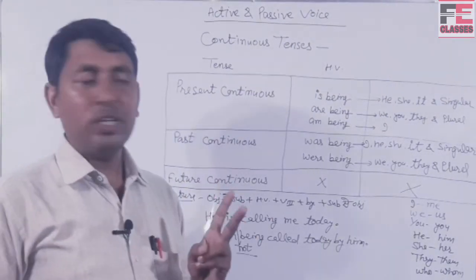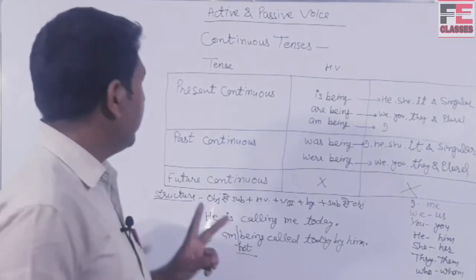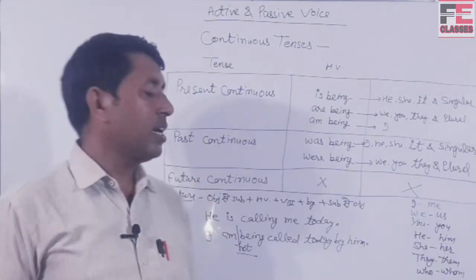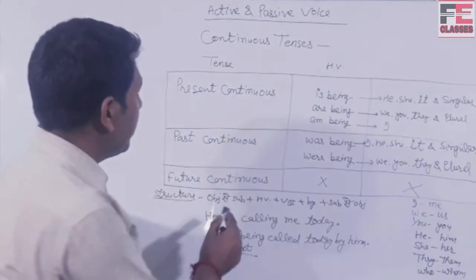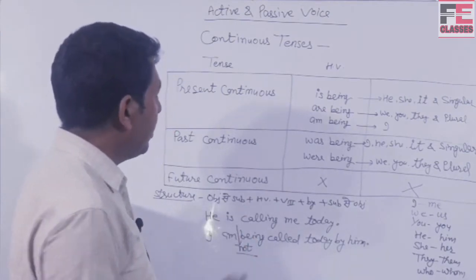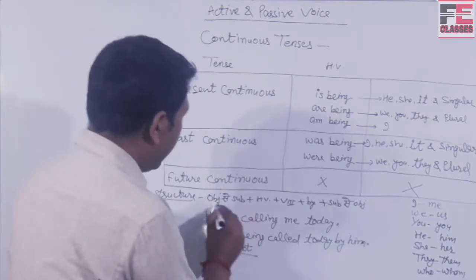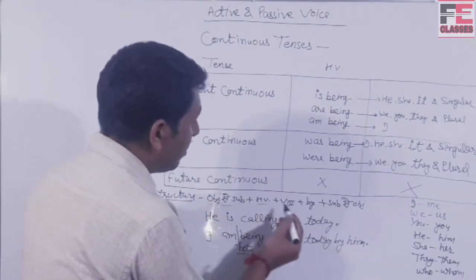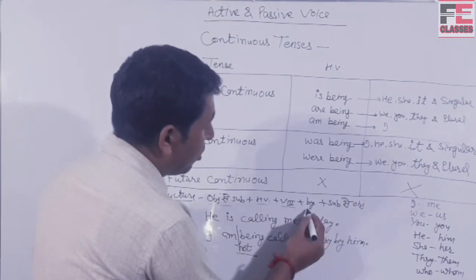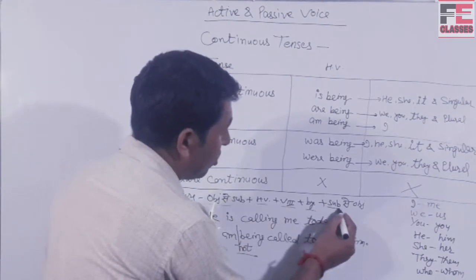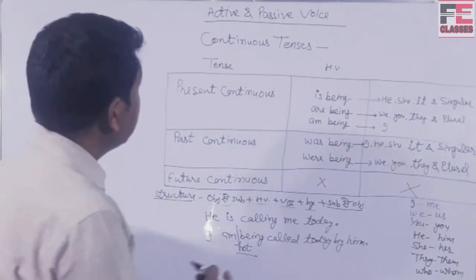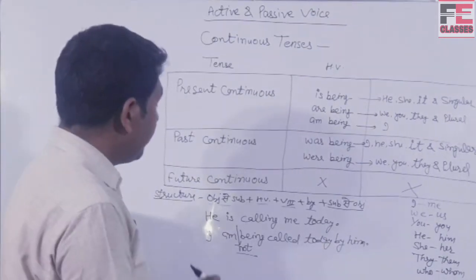अब इसका example देखते हैं। पहले structure लिखा है: object से subject बनाते हैं, उसके बाद helping verb आती है, helping verb के बाद verb की third form, new object से पहले 'by', और फिर subject से object बनता है।